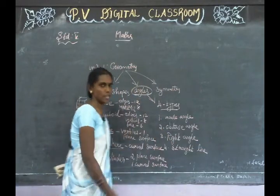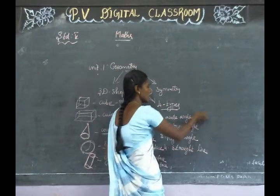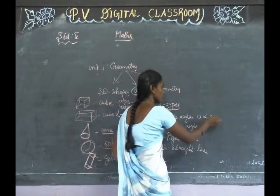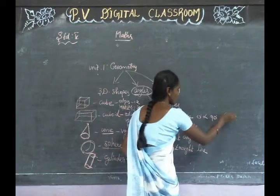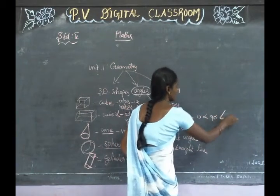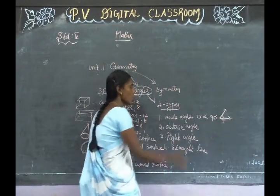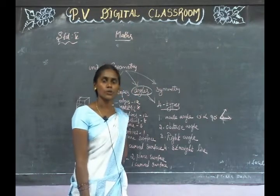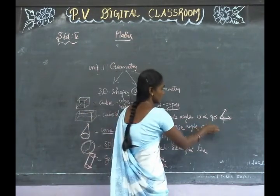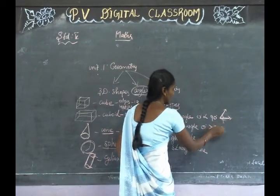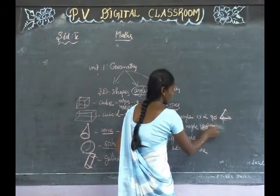Acute angle — 0 degrees to less than 90 degrees. That's what we call an acute angle. Then obtuse angle — greater than 90 degrees and less than 180 degrees.